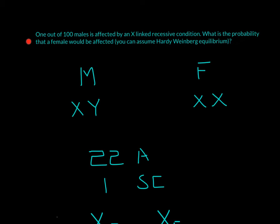Okay, so for this question, we have 1 out of 100 males is affected by an X-linked recessive condition. What is the probability that a female would be affected? You can assume Hardy-Weinberg equilibrium.